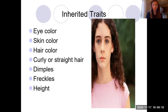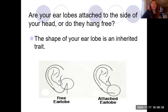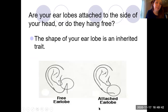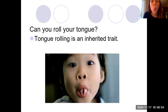Inherited traits are things like eye color, skin color, hair color, curly or straight hair, dimples, freckles, or your height. Look right now — are your earlobes attached to the side of your head or do they hang free? The shape of your earlobe, whether it's attached or free, is actually an inherited trait — you got that from your parent. Can you roll your tongue? You actually inherited that trait from a parent too. Some people can't roll their tongue at all. Try now!